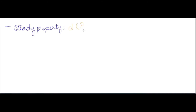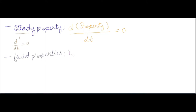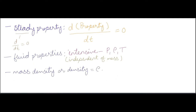The continuum concept, as discussed in thermodynamics, means mass distribution is uniform with no voids. A steady property means any property not changing with time. Fluid properties: intensive properties — those independent of mass, as discussed in thermodynamics — include pressure, density, and temperature.